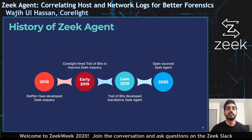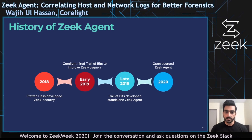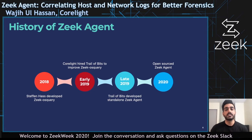The development on Zeek Agent started in 2018 when Stefan developed an initial prototype by extending the OSquery tool with bindings to connect with Zeek Agent and wrote Zeek scripts to correlate host and network logs. But this prototype had certain technical limitations that prevented production usage. So in early 2019, Corelight hired Trail of Bits to update and improve Stefan's Zeek OSquery prototype. However, Corelight and Trail of Bits soon realized it was more suitable for long-term development to make a standalone agent rather than just patching OSquery. So Zeek Agent was developed to operate both in standalone fashion and with OSquery. And in 2020, Zeek Agent was open-sourced to support Corelight's vision of community development and engagement.